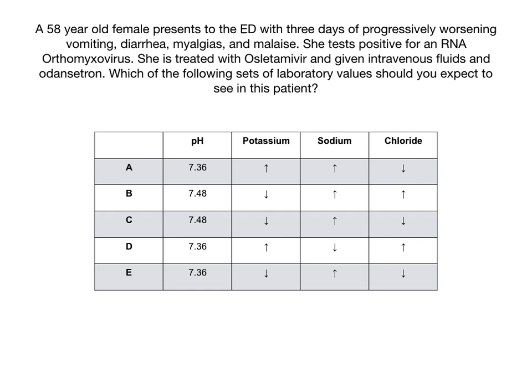There are five different choices, A through E, and each of them has a different pH, a different potassium, a different sodium, and a different chloride. For potassium, sodium, and chloride, there are up-down arrows, and the pH is written out as a numerical value. I'm not going to bother reading A through E to you, so pause the video so that you can review the possible answer choices.